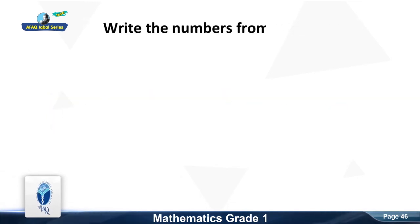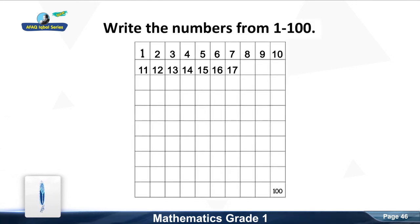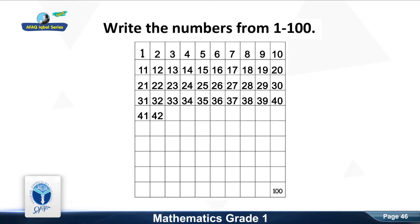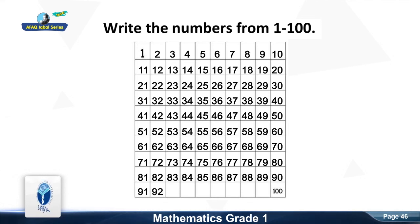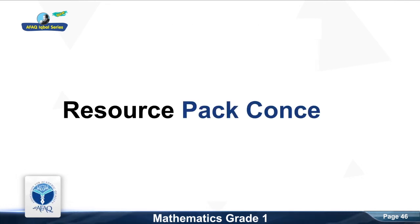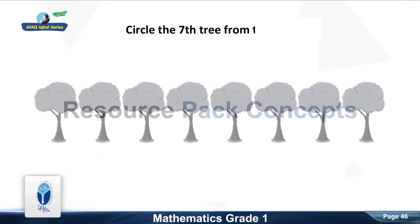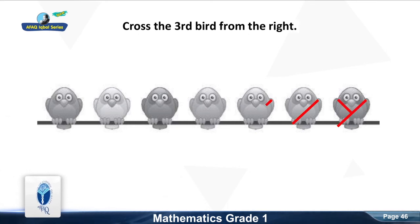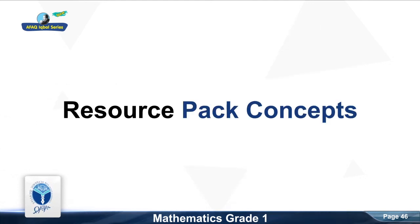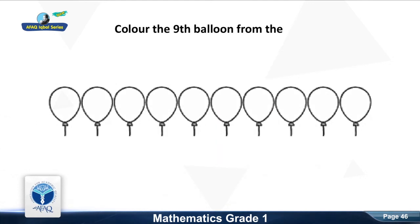Write the numbers from 1 to 100. Good. Now we move to the next resource pack. Circle the 7th tree from the left. Good. Now we move to the next resource pack concept. Cross the 3rd bird from the right. Good.